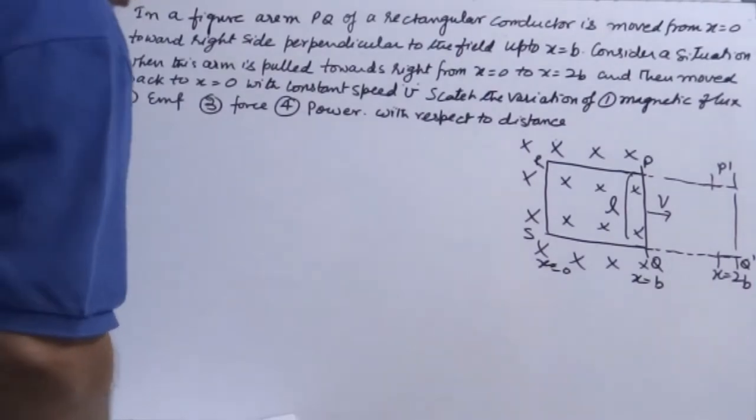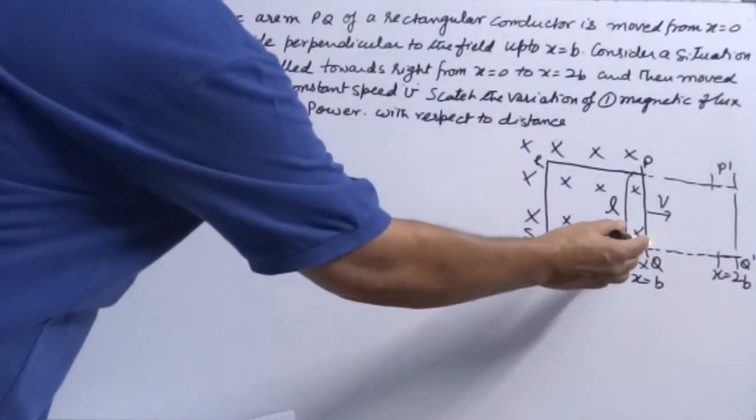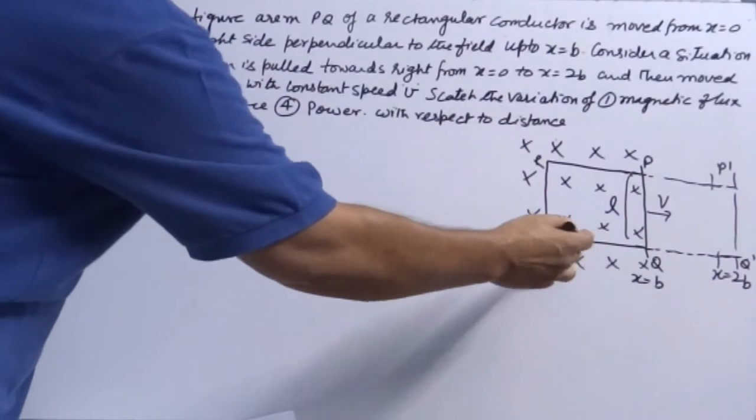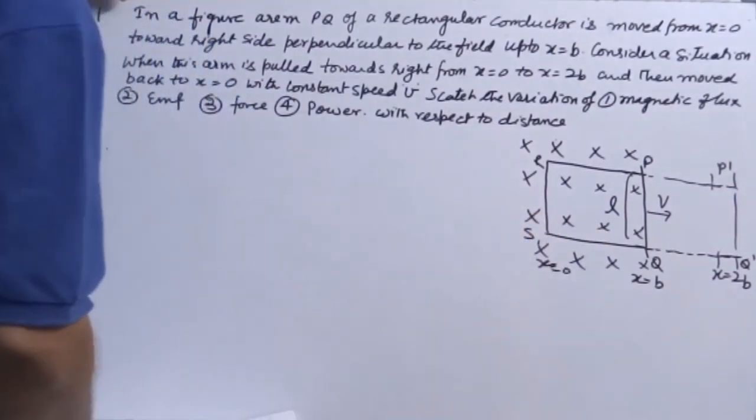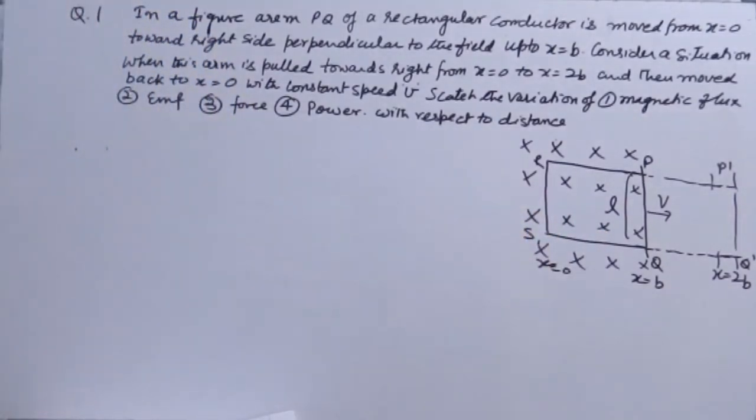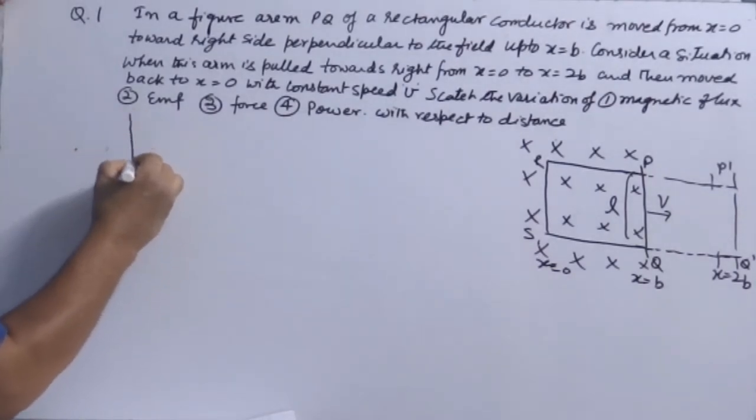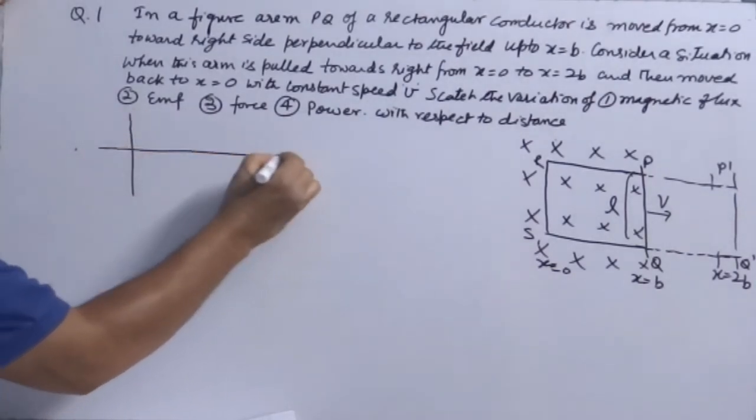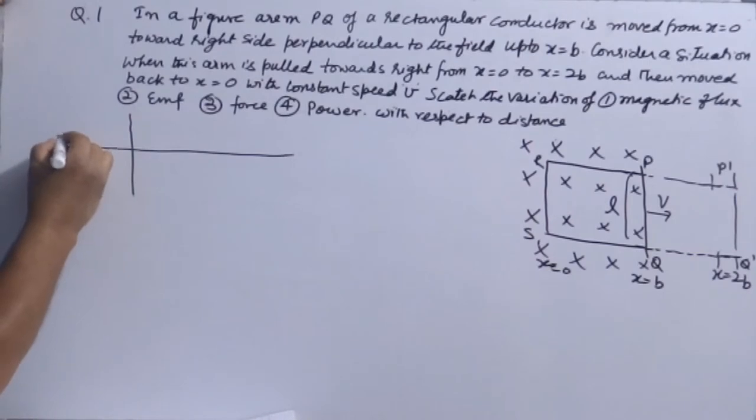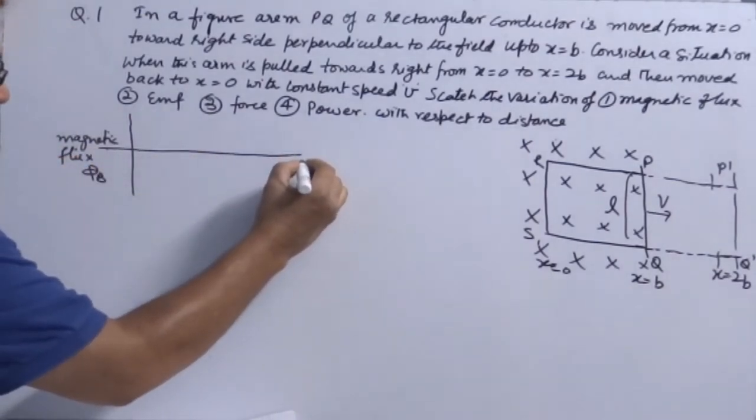From X equals B to X equals 2B will be constant. When it is moving towards this, then from point B again it is moving in the magnetic field, it starts decreasing. So let's see, one scale is this, this is about magnetic flux.